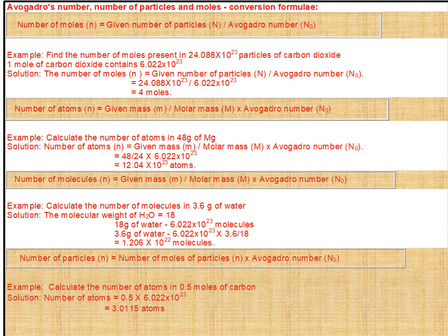Solution: number of atoms = (given mass ÷ molar mass) × Avogadro's number = (48 ÷ 24) × 6.022 × 10²³ = 12.04 × 10²³ atoms.